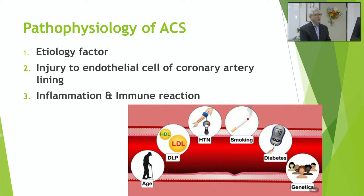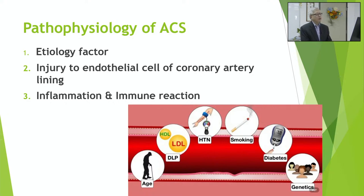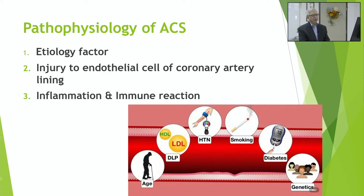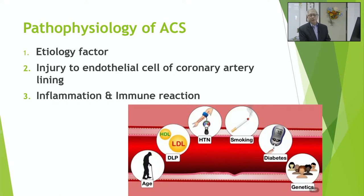This diagram shows the pathophysiology underlying Acute Coronary Syndrome (ACS). The risk factors include: age, cholesterol, high blood pressure, smoking, diabetes, and genetics. You will see these concepts repeated — at the end we can summarize that they are all related and all contribute, more or less, to people getting heart problems.